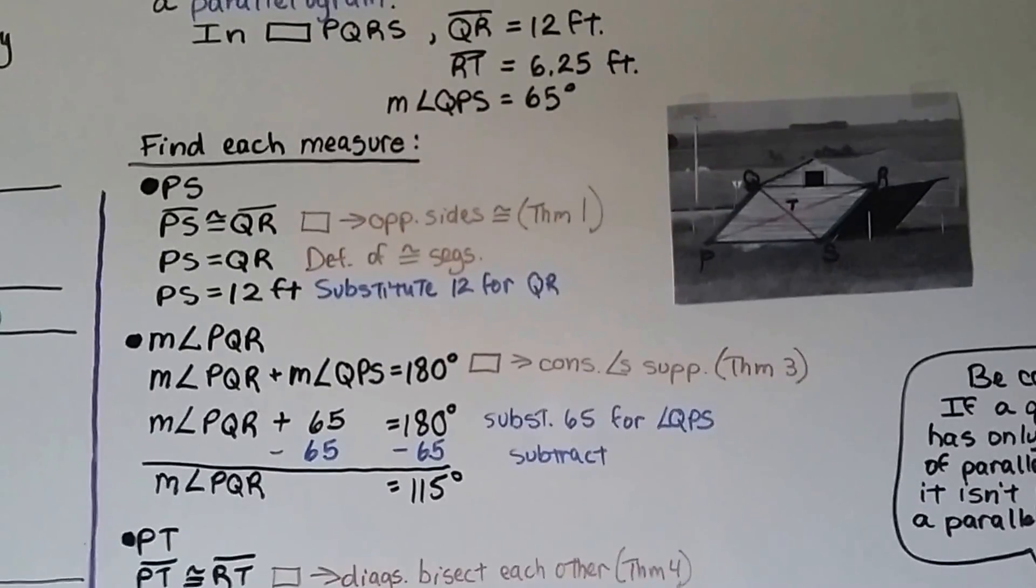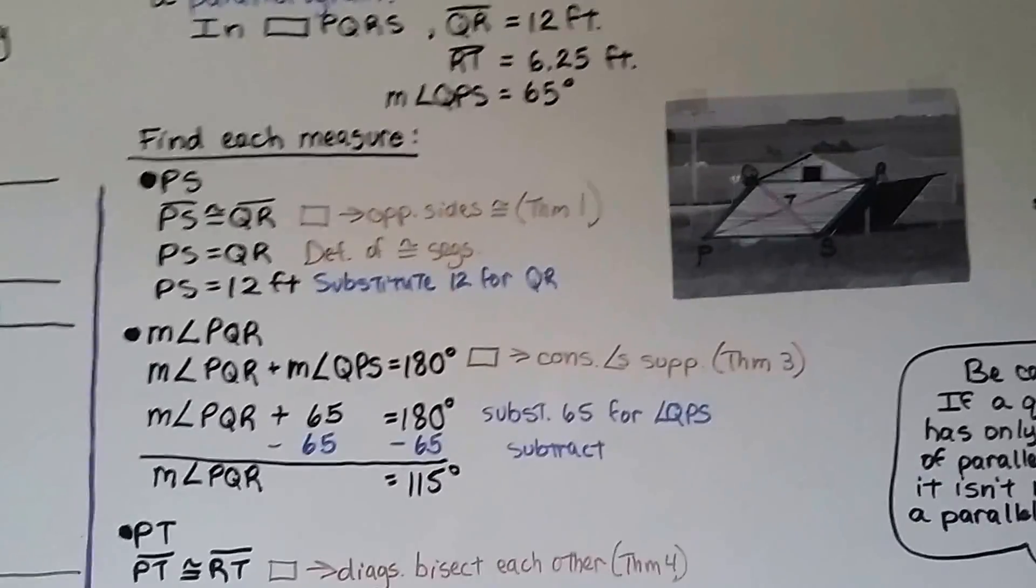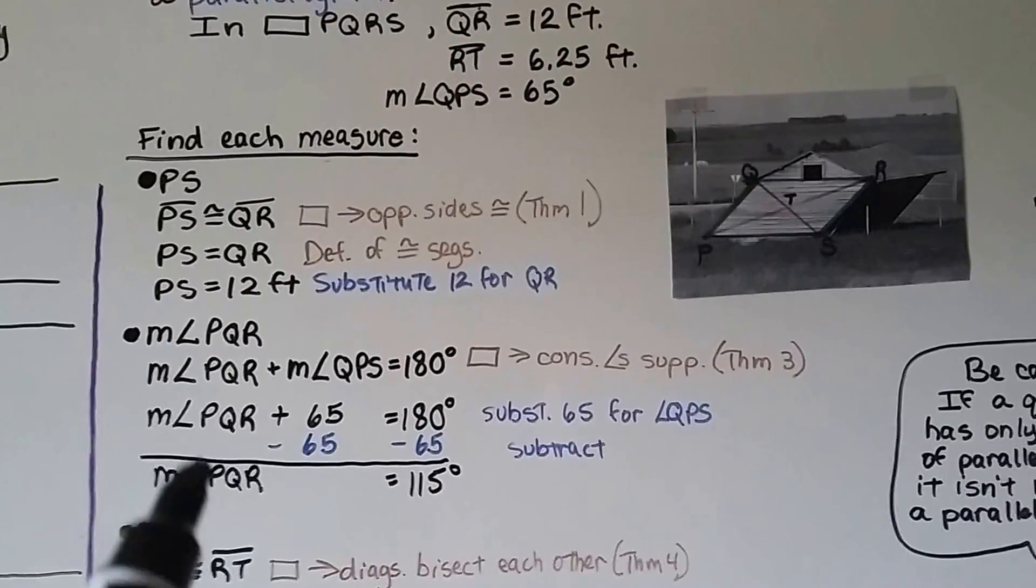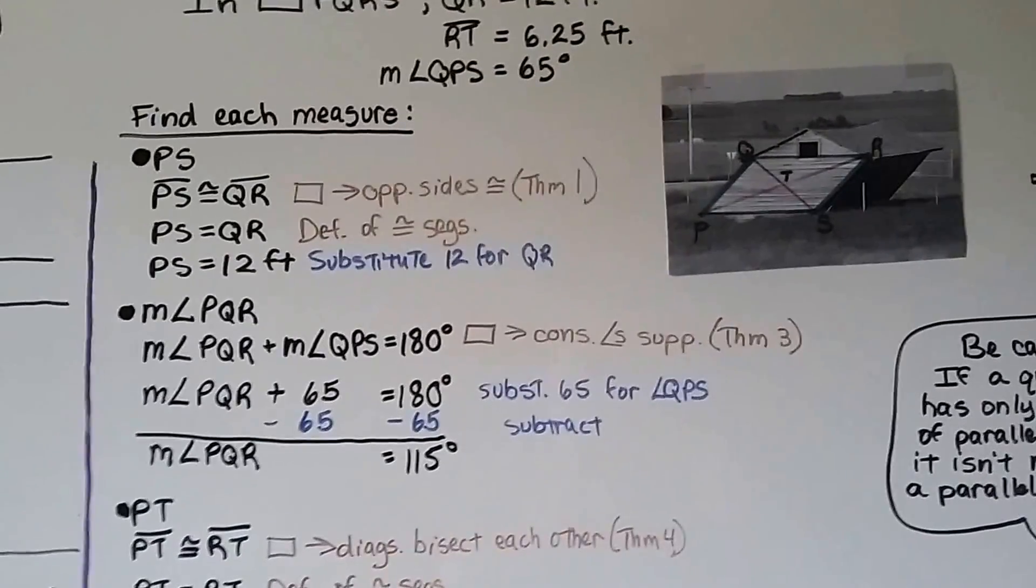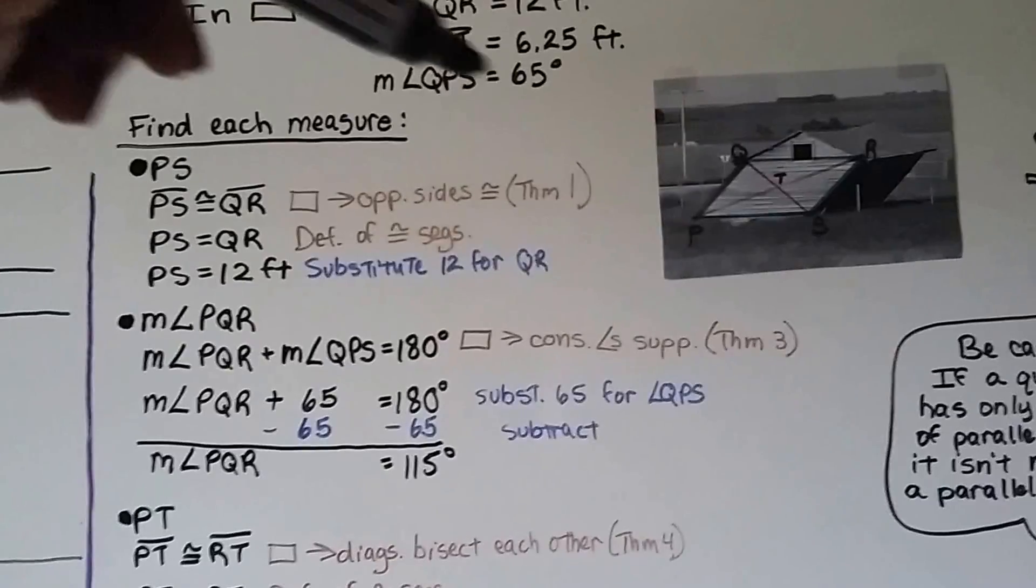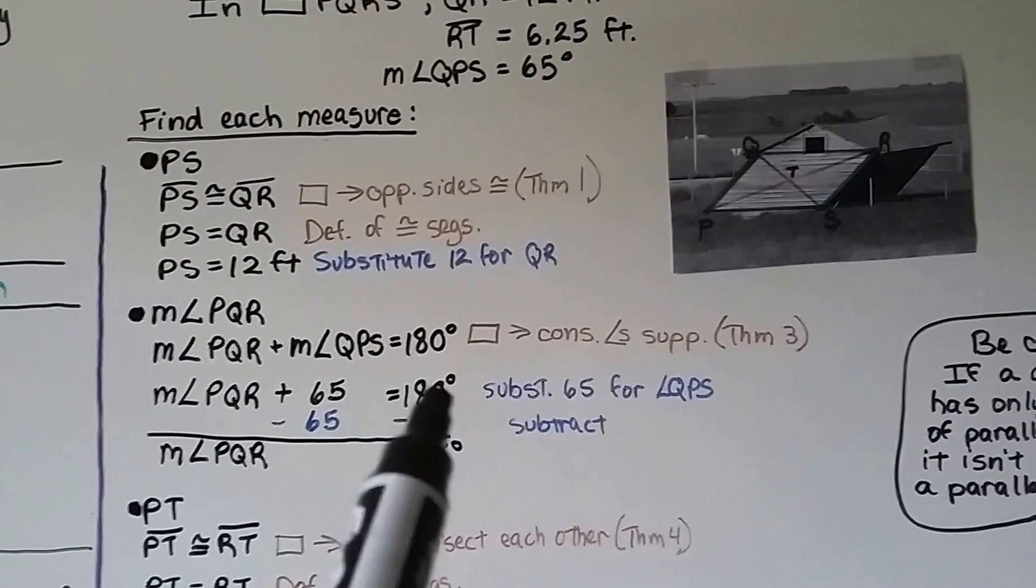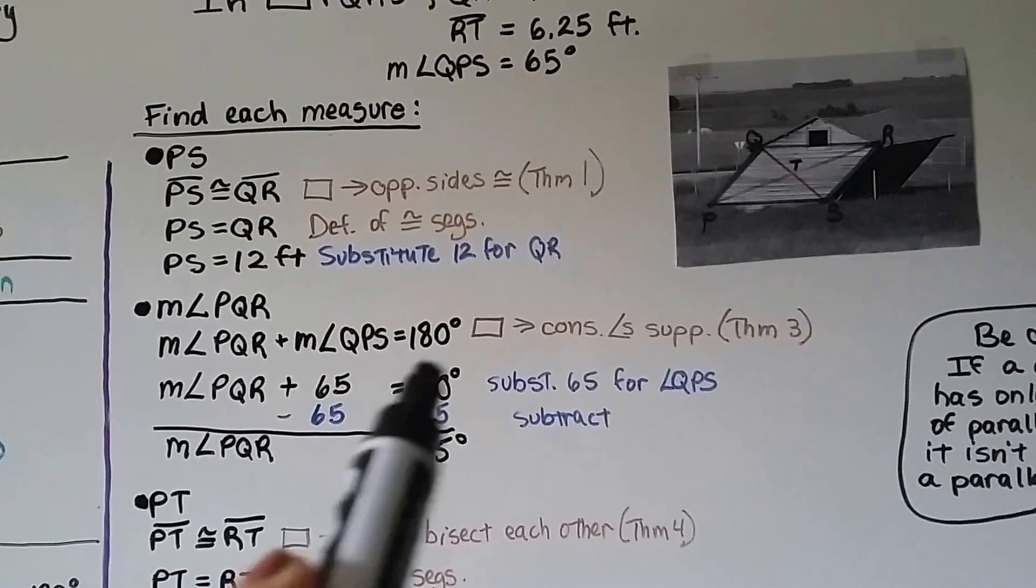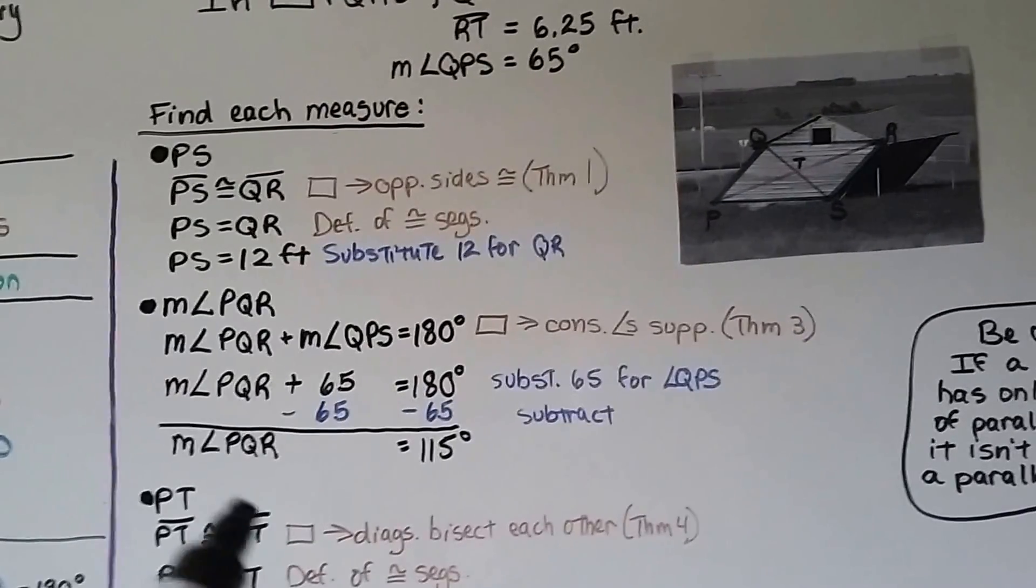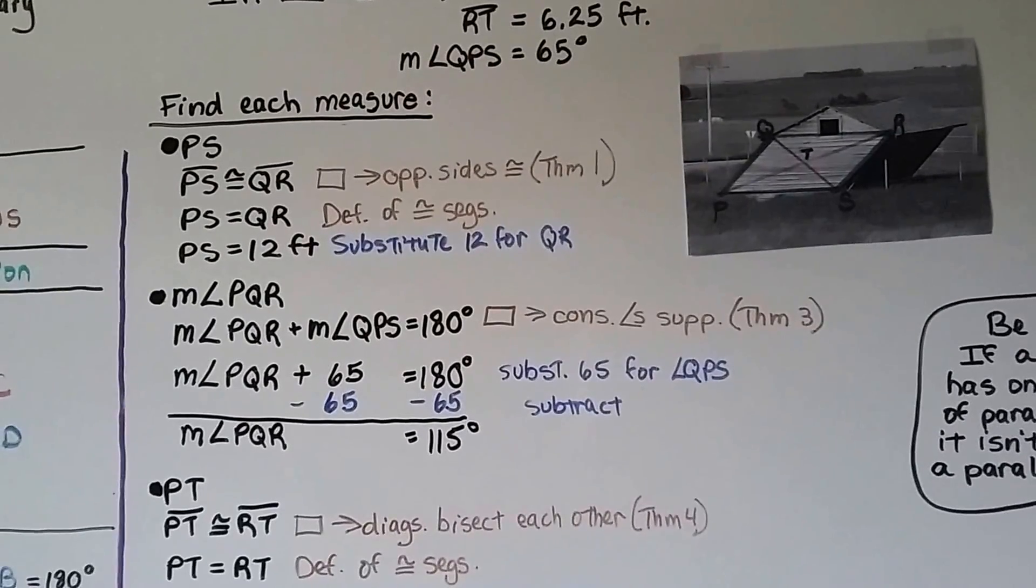We can find the measure of angle PQR. That's this big one up here. We know from the third theorem that if we add PQR and QPS, it should equal 180 degrees. And we know QPS is 65. So we can write our equation that way and subtract 65 from both sides. And we're left with measure of angle PQR is equal to 115 degrees.